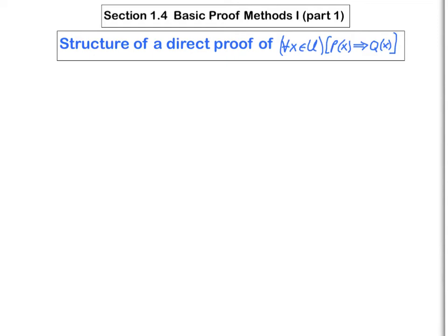This is the first in a series of lectures on section 1.4 entitled Basic Proof Methods 1. In this video, we're going to discuss how you prove propositions of the form for all x in U, if P of x, then Q of x. We're going to demonstrate how to write what's called a direct proof of such a proposition.